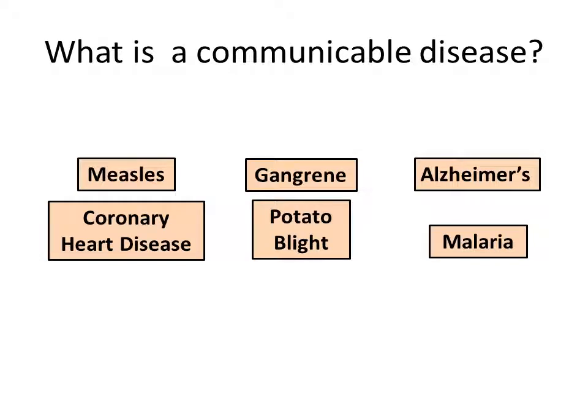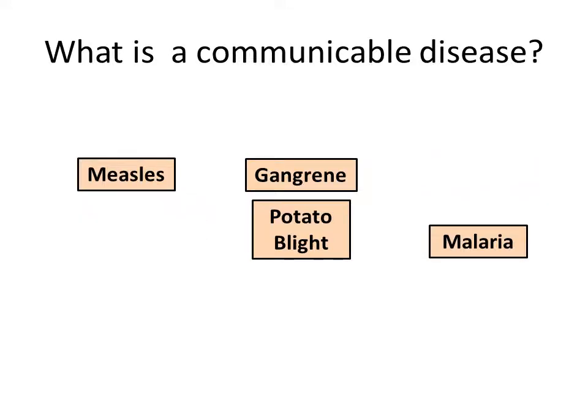Have a quick look at these six diseases: measles, coronary heart disease, gangrene, potato blight, Alzheimer's and malaria. The question is: what is a communicable disease? Out of these six, which if any are non-communicable? Hopefully you've been able to identify that coronary heart disease and Alzheimer's are non-communicable diseases, leaving measles, gangrene, potato blight and malaria as communicable diseases.